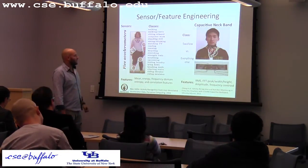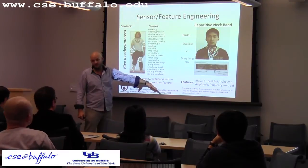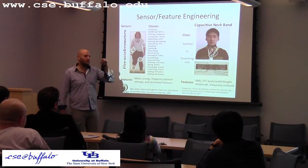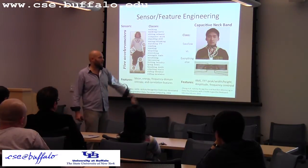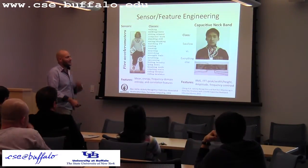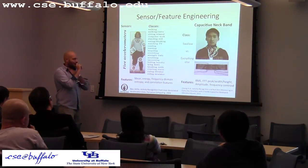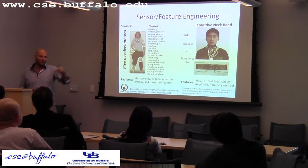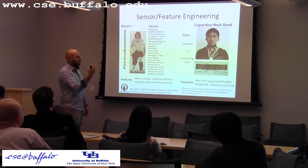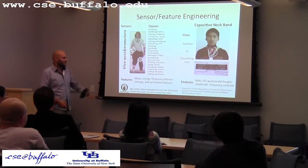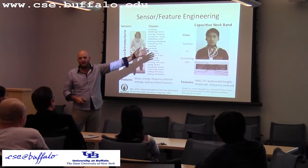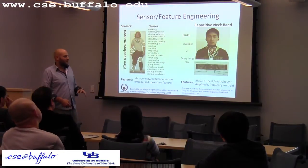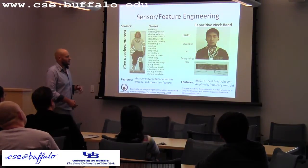Here's a very different example: instead of differentiating many activities from each other, we're trying to recognize swallowing versus everything else — this is called activity spotting. We want to pinpoint in time every single time somebody swallows. The sensor used is a capacitive neck band. I saw the researcher who published this — during her presentation she pulled up a live data feed, started drinking water, and you could clearly see when she was swallowing. Your eyes are the classifier recognizing that behavior from the sensor signal. Different sensor, different features — it's a completely different approach.